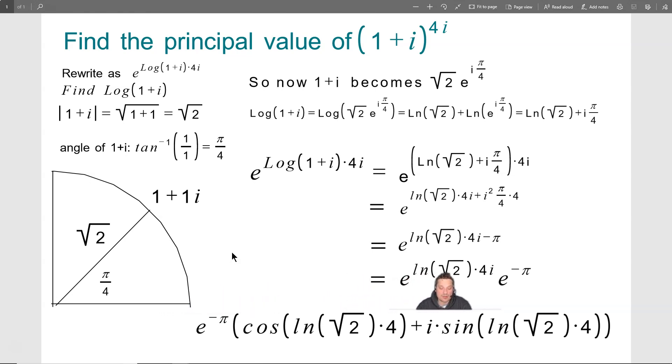Now for the second piece, e to the ln, square root of 2, 4i, well, you see that it's e, there's an i present, so you can write it in a cosine and sine form. So we're going to rewrite e to the ln root of 2, 4i as cosine of ln of the root of 2, 4, plus i times the sine of the ln of the root of 2 times 4.